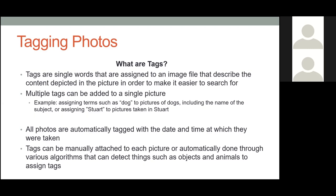All photos you take are automatically tagged with the date and time they were taken — that's across the board, they always have that information. Tags can also be manually attached to each picture, or automatically done through AI detection, which can detect things such as objects and animals and assign tags based on that. Sometimes it doesn't work the best, but it is a little more seamless than having to tag each picture individually, which is pretty tedious.